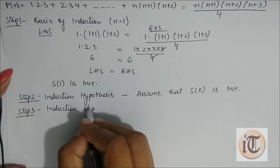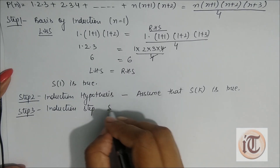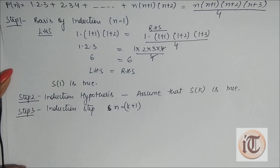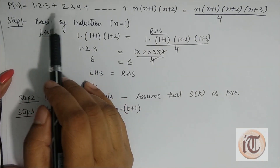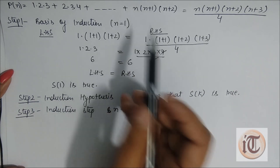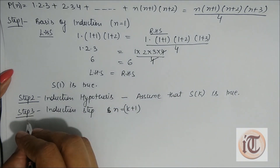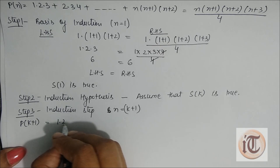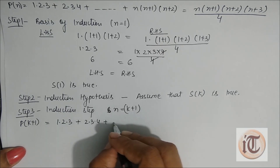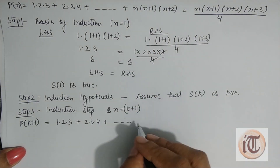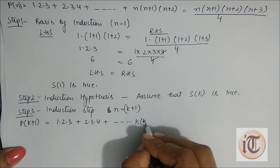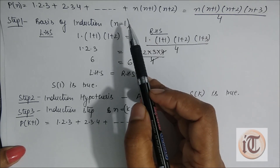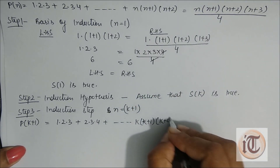In the induction step, with the help of this assumption, we take n equals to K+1 and substitute it into the main equation. So S(K+1) equals 1·2·3 + 2·3·4 + ... up to K(K+1)(K+2), and before the last term, instead of K we put K+1, giving K+1, K+2.